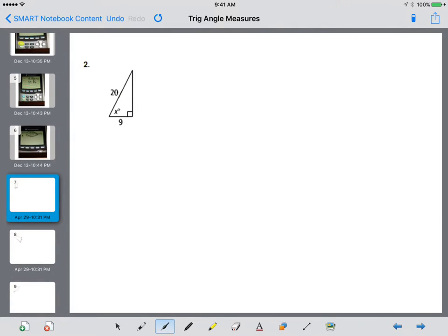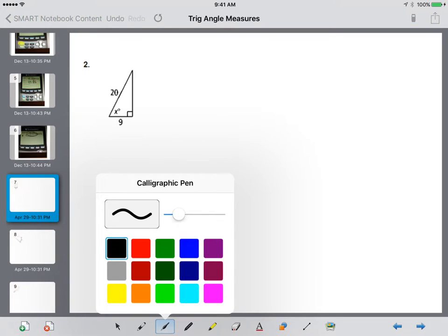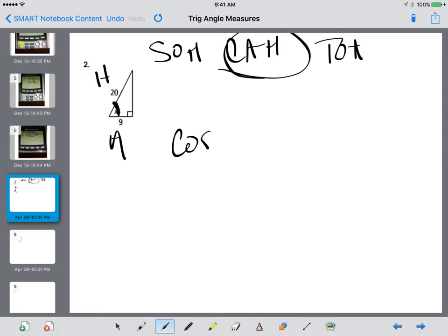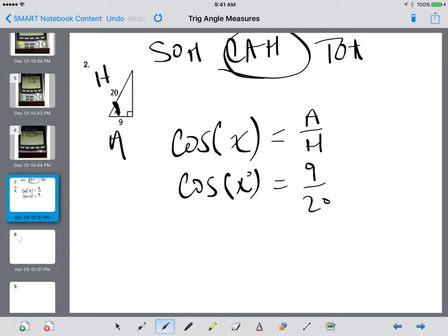Let's try number two. This is my angle measure. I have the adjacent and the hypotenuse. So, CATOA. We're using adjacent and hypotenuse. That's the middle one, that stands for cosine. So we're going to say cosine of my angle is going to equal the adjacent over hypotenuse. So cosine of x degrees equals the adjacent, 9, over 20.